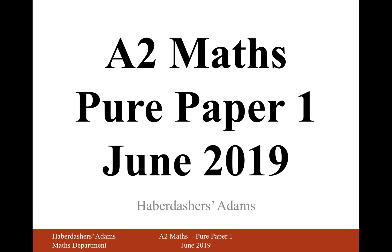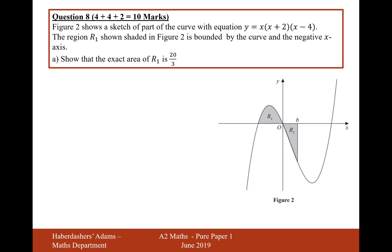Hello there and welcome to June 2019, here we're on paper 1 at A2 Maths, looking at question 8. Figure 2 shows a sketch of part of a curve with equation y equals x times (x plus 2) times (x minus 4). The region R1 shown in figure 2 is bounded by the curve and the negative x-axis. Show that the exact area of R1 is 20 over 3.